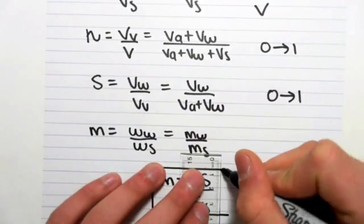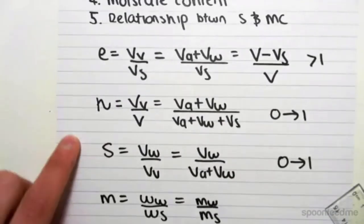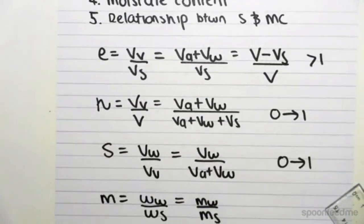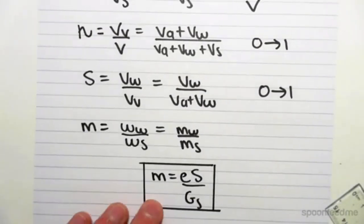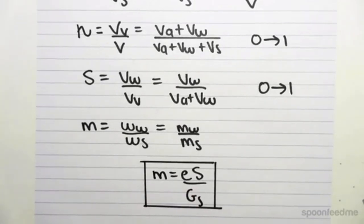This relationship is very important, and it comes up a lot in soil mechanics. It sort of connects almost everything we've done here. It connects E, S, and M. The moisture content equals the void ratio times the saturation divided by the specific gravity of the solid.